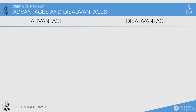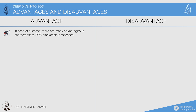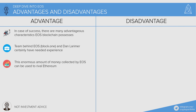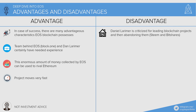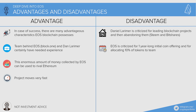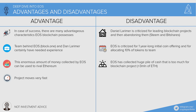What is currently criticized about EOS, and what is admired? Advantages: in case of success, EOS blockchain has many advantageous characteristics. The team behind EOS — Block.one and Dan Larimer — certainly have the needed experience. The enormous amount of money collected can be used to rival Ethereum, and the project moves very fast. Disadvantages: Daniel Larimer is criticized for leading blockchain projects and then abandoning them — Steemit and BitShares are examples. EOS is also criticized for its one-year-long ICO and for allocating 10% of tokens to the team. EOS has collected more than 3 million ETH — a huge pile of cash — and many question whether they need that much. The core concern is whether the project can actually deliver on its many promises.